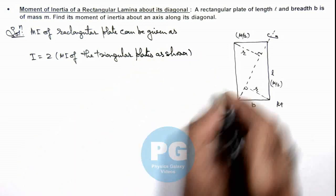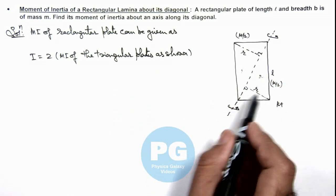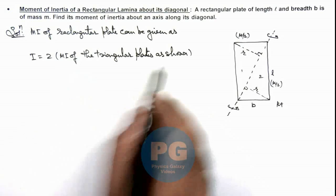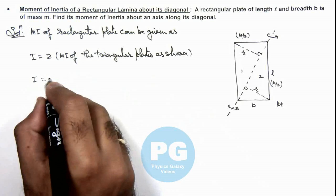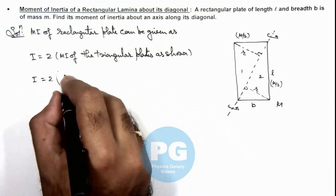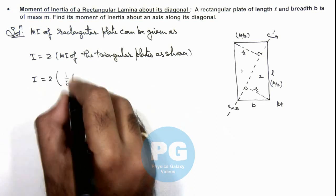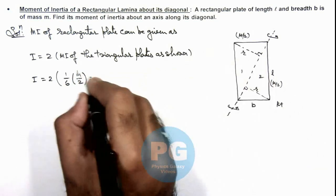Here this is one triangular plate, this is another triangular plate. So both will be identical, so it will be twice the moment of inertia of triangular plates. And the moment of inertia of triangular plates we already studied earlier, that it is given by 1 by 6, its mass we can write as m by 2 multiplied by r square.